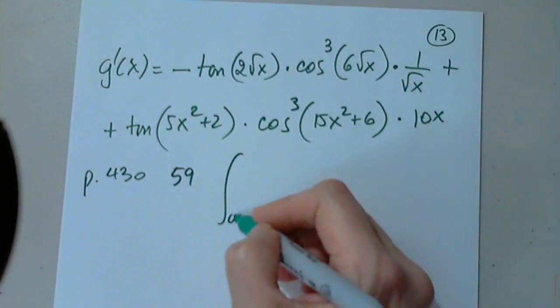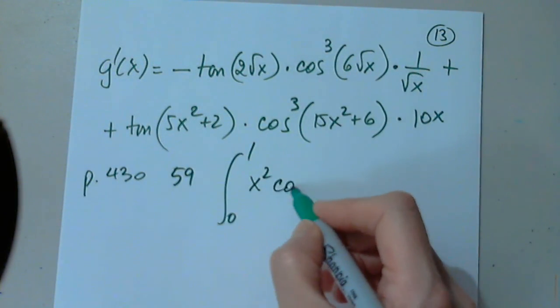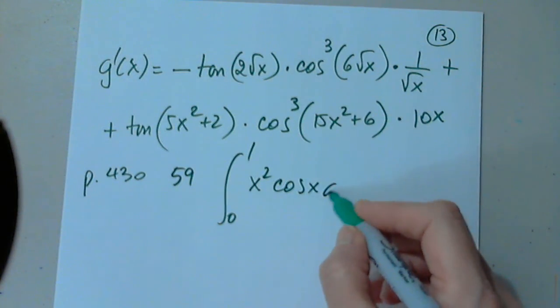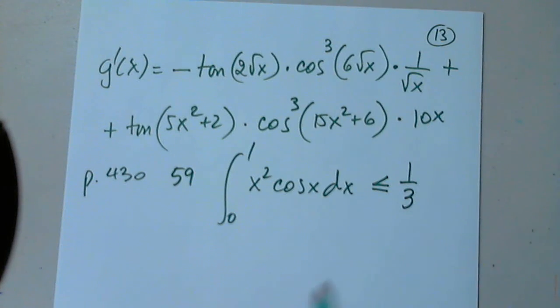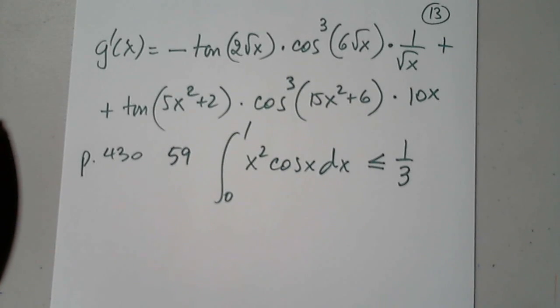So the integral from zero to one of x squared cosine x dx, show that this is less than or equal to one third. Take this book away. It's out of the way now. Good, so here we are only asked to, let's see.